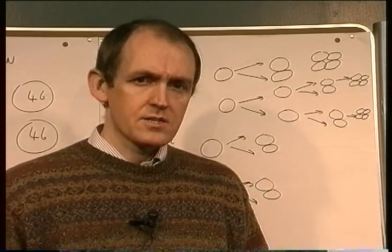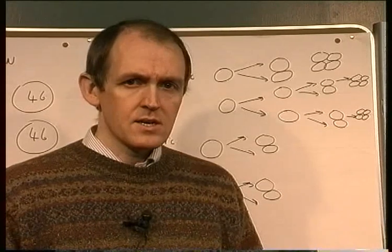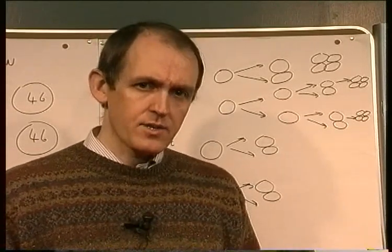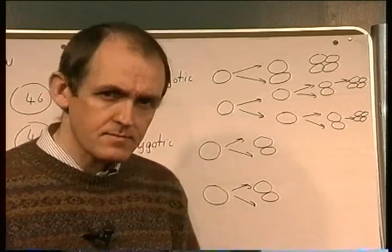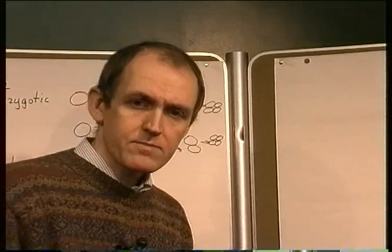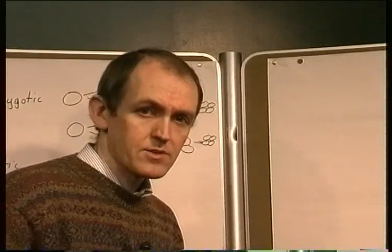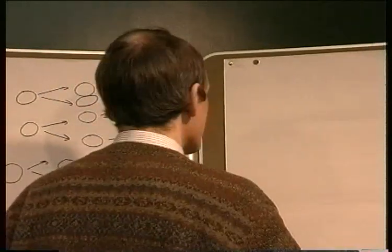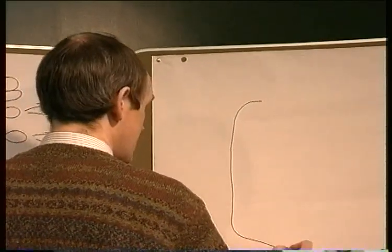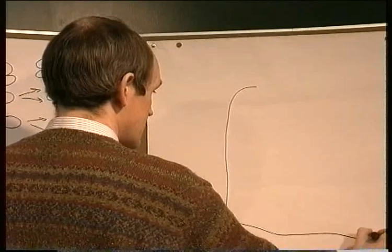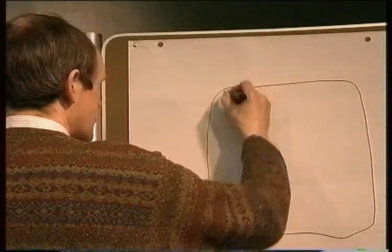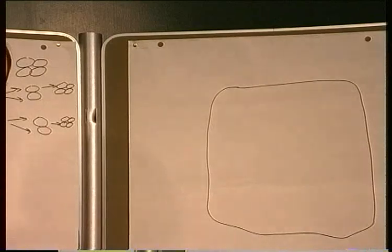So we're going to look at a generalised animal cell as seen under the light microscope and look at how it is composed. And again, build up the diagram with me, draw it with me. So again, a generalised outline to the cell.